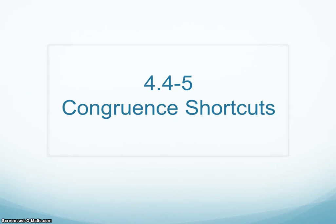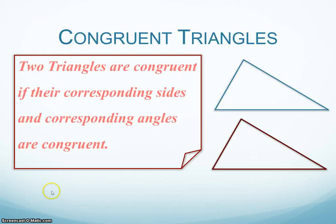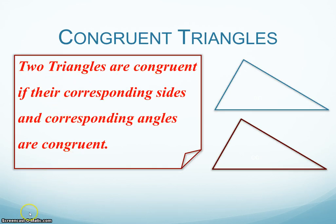Hi class, today we are going to be talking about congruent shortcuts. The congruent shortcuts are when we're trying to look at two different triangles and see if they are congruent. So for our first one, we're going to look at triangle congruency. Two triangles are congruent if their corresponding sides and their corresponding angles are congruent.